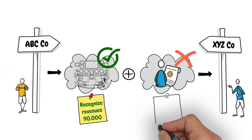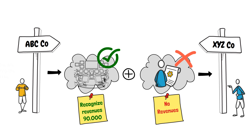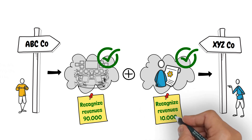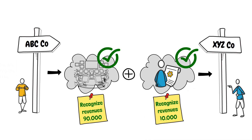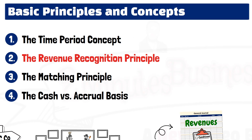On the other hand, ABC cannot recognize any revenues from the maintenance services as it has not satisfied that obligation yet. When that service is delivered by ABC in the future, then only can it recognize revenues with the remaining $10,000, the price allocated to the maintenance services obligation. Now, let us talk about the matching principle in the following lecture.